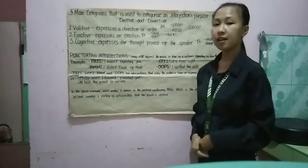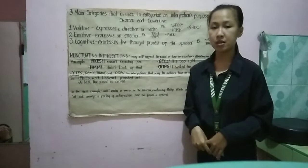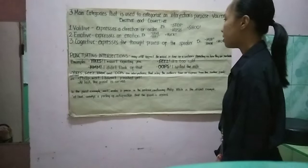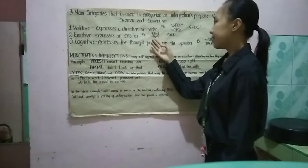Number one, VOLITIVE expresses a direction or order. They are often related to an imperative clause. Examples: STOP, HUSH, or SHOOT. Number two, EMOTIVE expresses an emotion. They are intended to emphasize the emotion being provoked by the preceding or following sentence. Examples: UH, YAY, or YUCK.